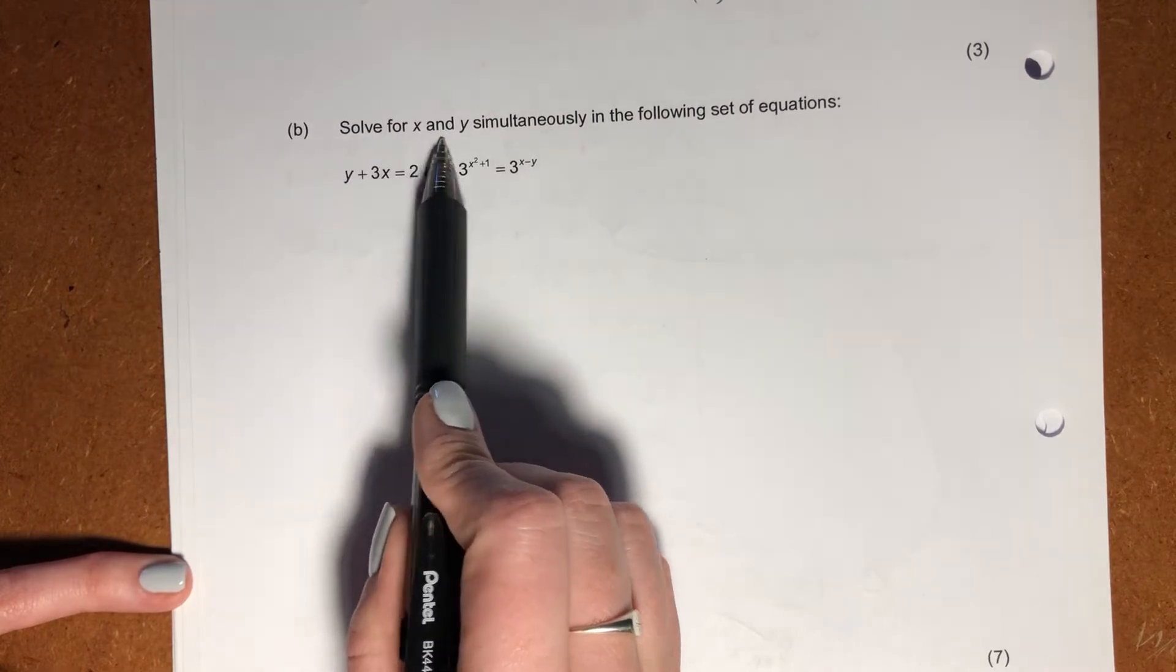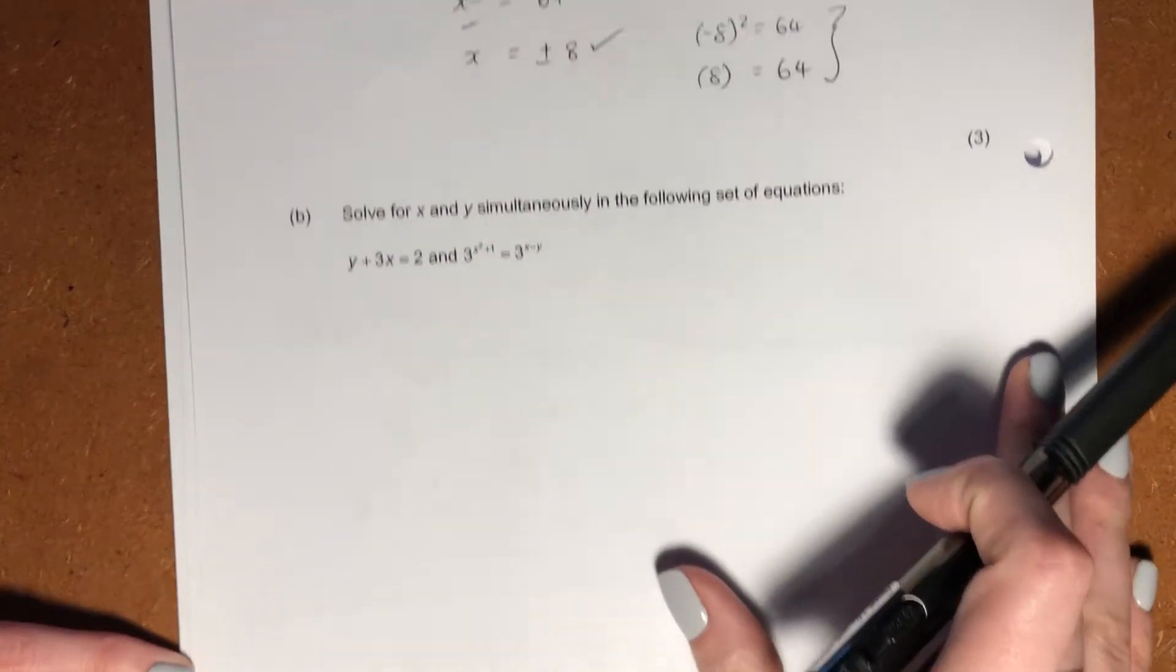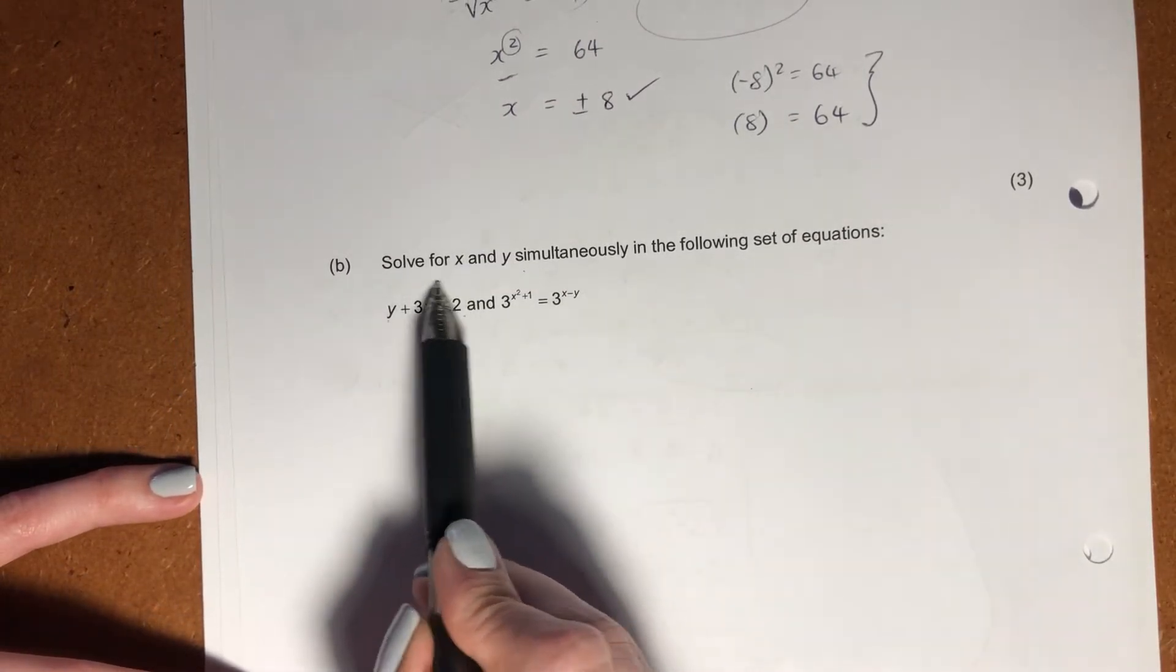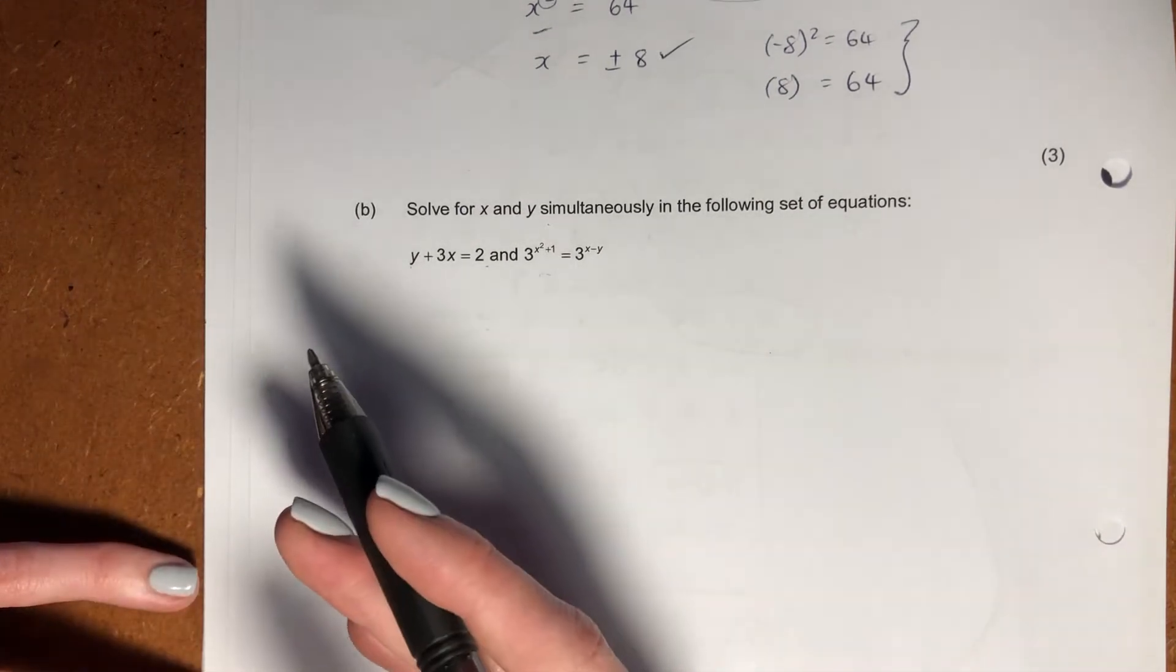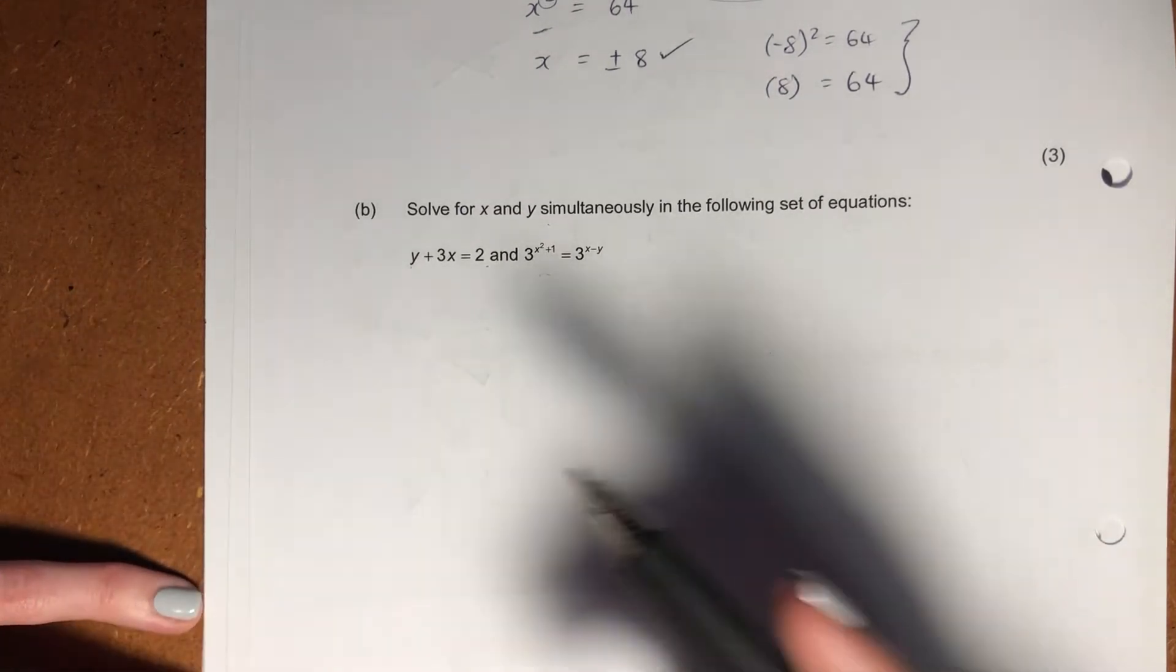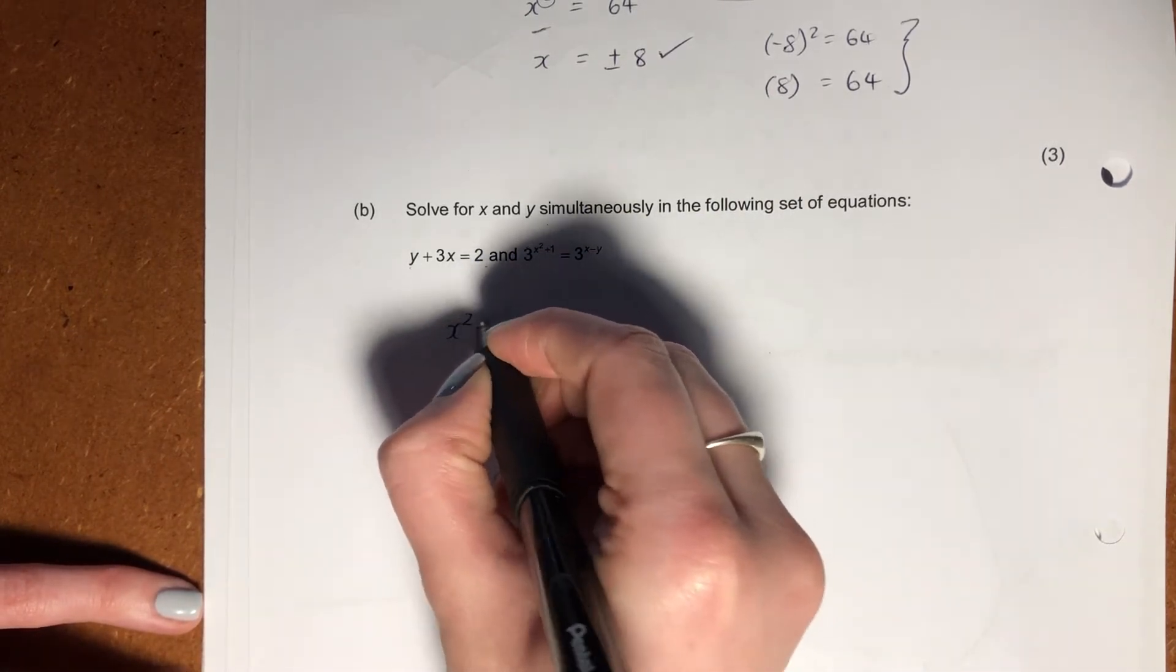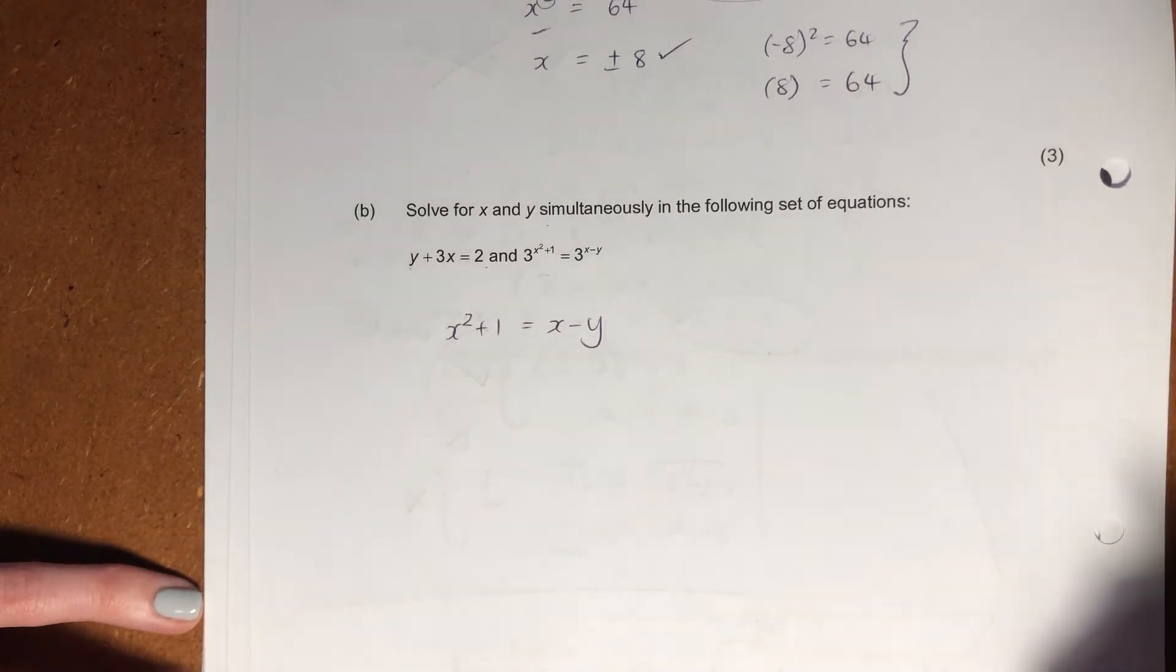It says solve for x and y simultaneously in the following set of equations. So now we have two equations. One of them is linear, one of them is exponential. But don't panic. What's nice about the exponential is they have the same bases. And we know that in an exponent, if they have the same bases, you can actually drop the base and just use the exponents and equate those to each other.